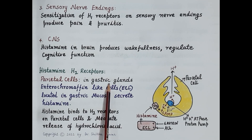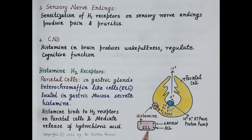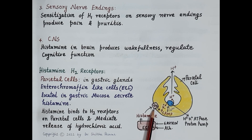The enterochromaffin-like cells containing histamine are located in the gastric mucosa. Stimulation of these enterochromaffin-like cells by gastrin and acetylcholine releases histamine. Histamine then binds to H2 receptors present on the surface of the parietal cell, causing increased cyclic AMP (cyclic adenosine monophosphate) generation.